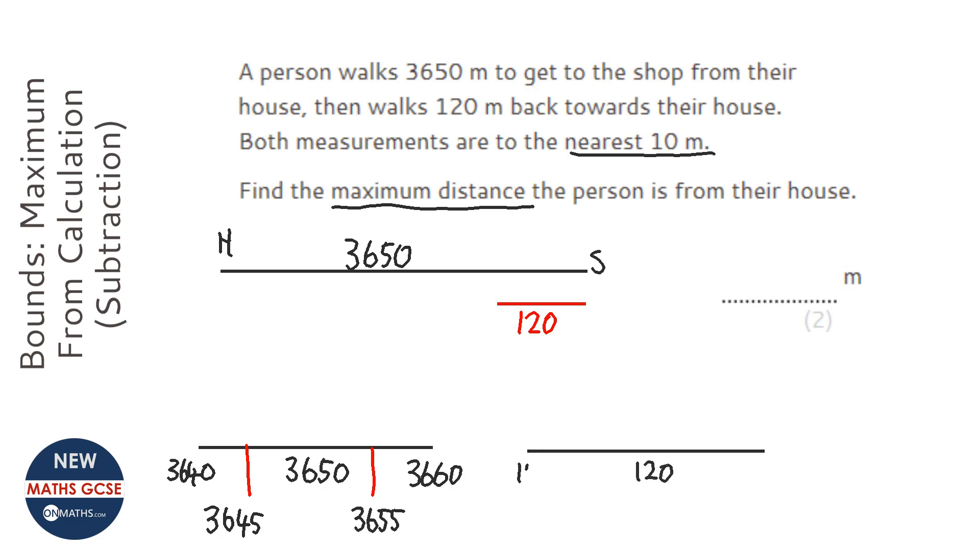Then we do the halfway points to find the lower and upper bound: 115 and 125. Now we're looking for the maximum distance, so we want the distance they traveled to the shop to be as high as possible, and we want them to walk back as little as possible.